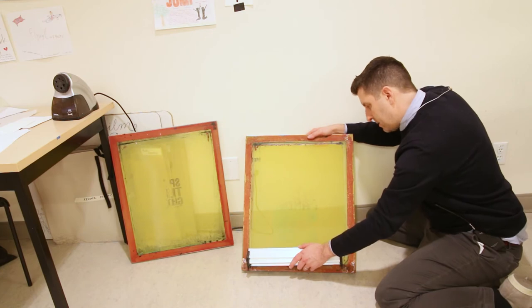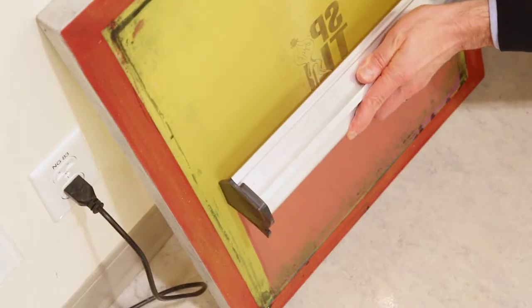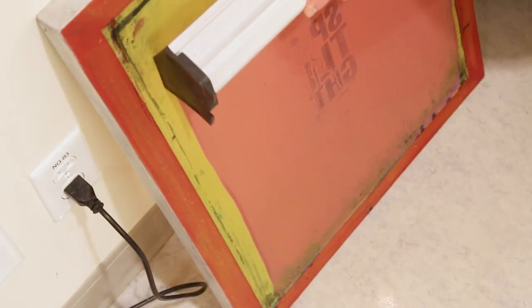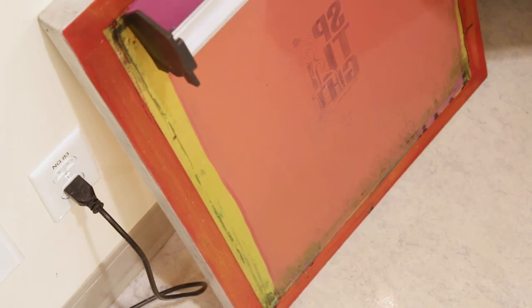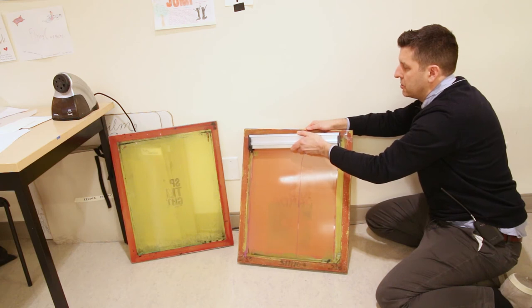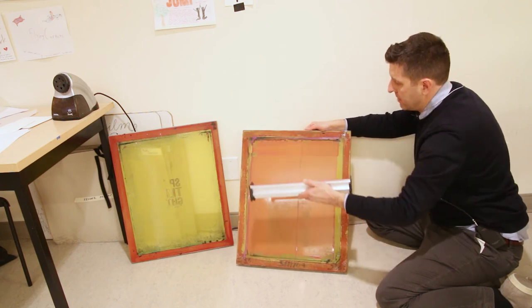I can then ensure that I've got a good grip and I'm going to pull up on the screen and I'm just gonna steadily pull. When I get to the top I'm just going to start tilting my scoop coater back a little bit so that I don't get too much emulsion building up on the very top.